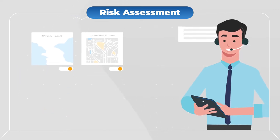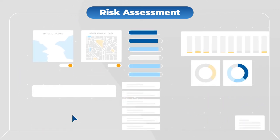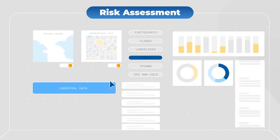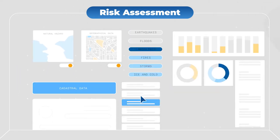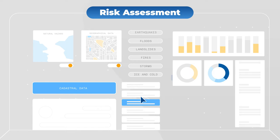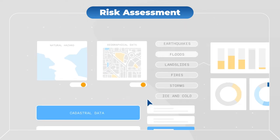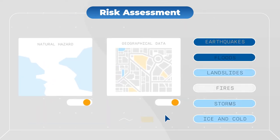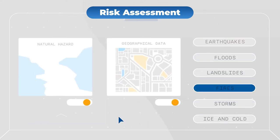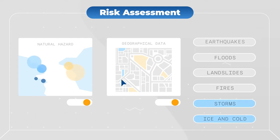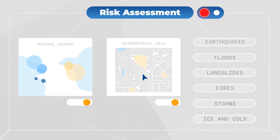For each risk category, the platform provides specific data and indicators — for example, for properties: land registry, geospatial and morphological information, as well as natural hazard maps.